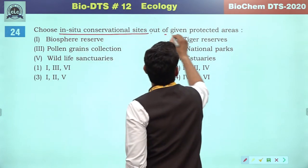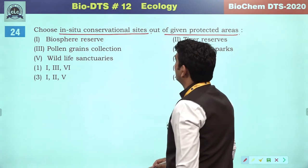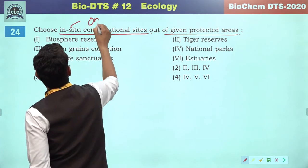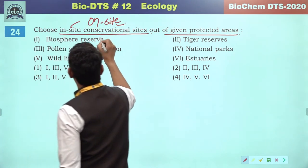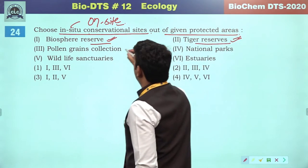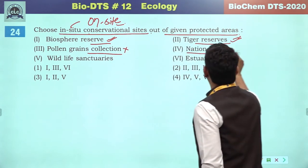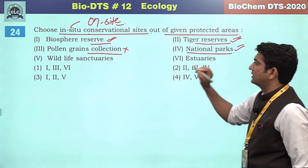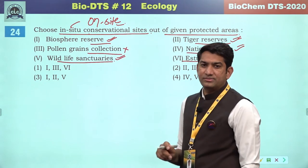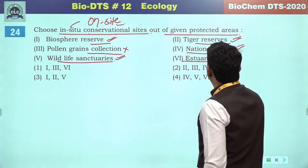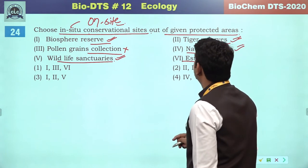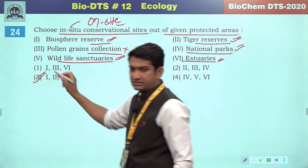Choose in-situ conservation sites from the given protected areas. In-situ means on-site conservation. Biosphere reserve — on-site conservation. Tiger reserve — on-site conservation. Pollen grain collections — off-site conservation. National parks — on-site conservation. Wildlife sanctuaries — on-site conservation. Estuaries are productive ecosystems but not conservation sites. So we can go for first, second and fifth — the third will be the correct answer.